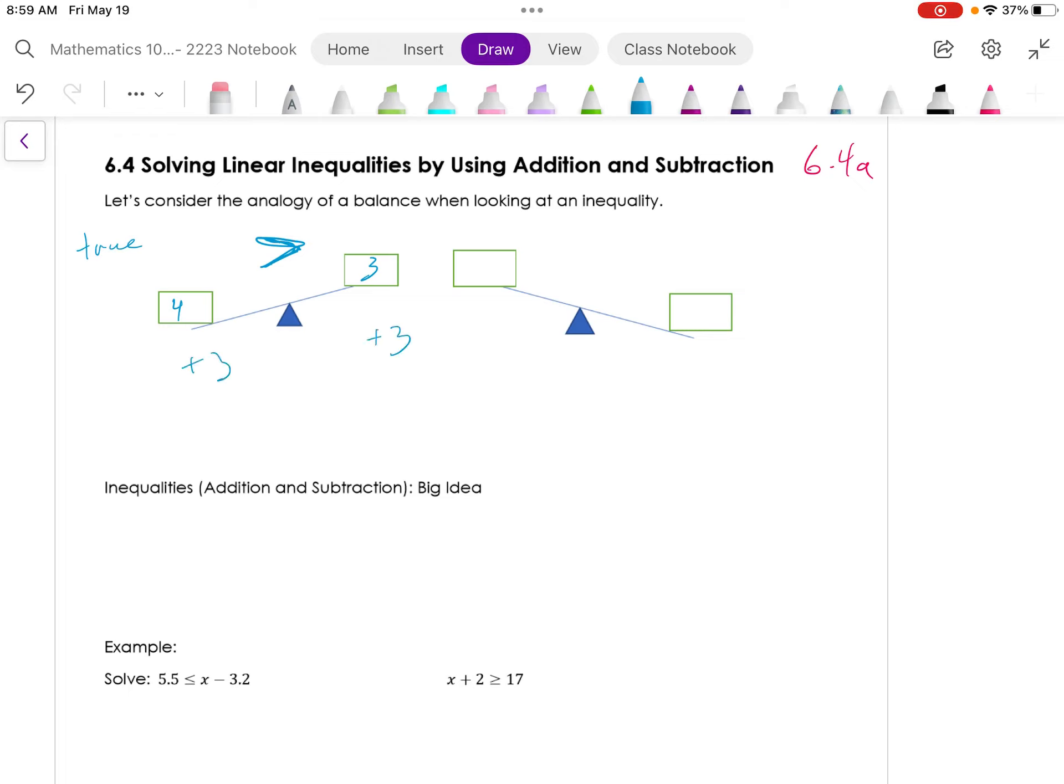If I add 3 to both sides, the left-hand side would be 7 is greater than 6. So if I add a quantity, it appears that inequality remains.